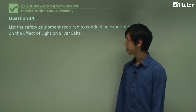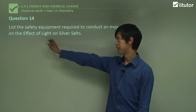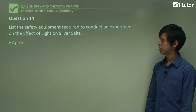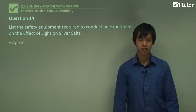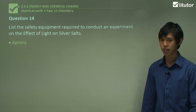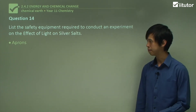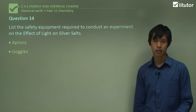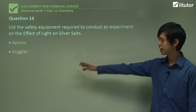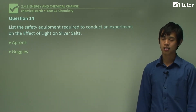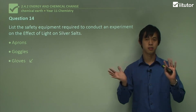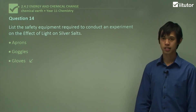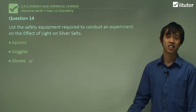Question 14: list the safety equipment required to conduct an experiment on the effect of light on silver salts. We definitely need aprons — we don't want silver nitrate on our clothing as it will stay there for a really long time. We need goggles in case it gets in your eye, and gloves to stop you from getting black stains all over your hands. That's basically all the safety equipment required.